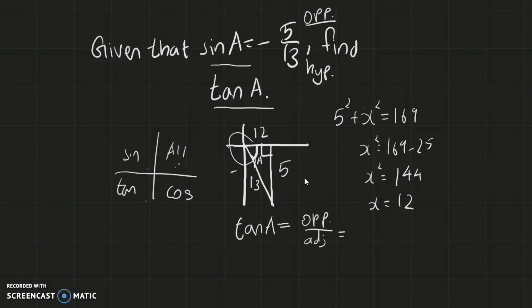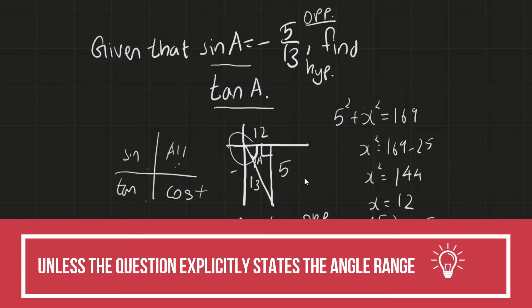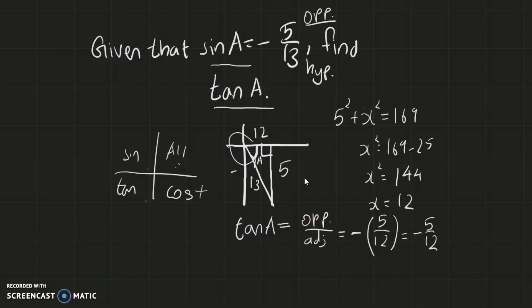Now finding tan(a): tangent is opposite over adjacent. In quadrant 4, only cosine is positive, so tangent is negative. Applying the negative sign: tan(a) = −5/12. If they specify a particular quadrant, proceed with that; most of the time you can choose which quadrant to work in. That's the process — thank you.